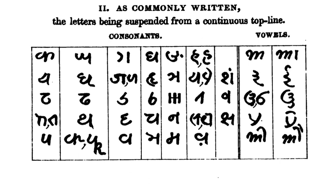Kaithi, also called Kayathi, is a historical script used widely in parts of North India, primarily in the former Awadh and Bihar. It was used for writing legal, administrative, and private records.